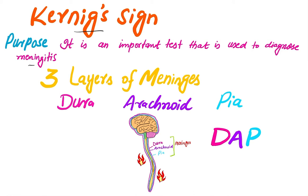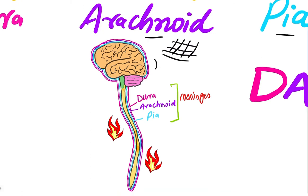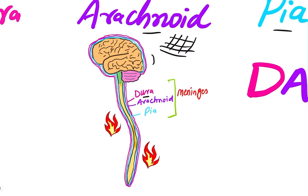What is meningitis? It is the inflammation of the meninges. What are the meninges? These are the coverings around the brain and spinal cord. There are three main coverings: dura mater, arachnoid mater, and pia mater. Dura mater is the toughest or most durable layer. Arachnoid mater is in the form of a mesh or net. Pia mater is the thinnest layer. Dura mater is the outermost layer, arachnoid mater is the middle layer, and pia mater is the innermost layer covering the spinal cord and brain.